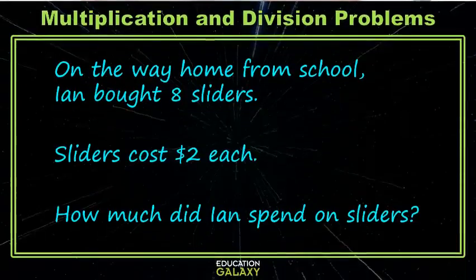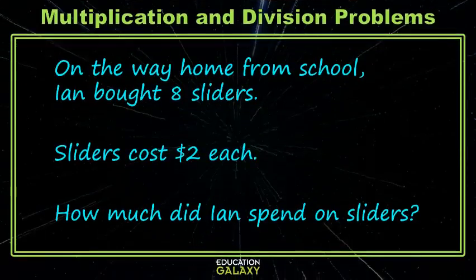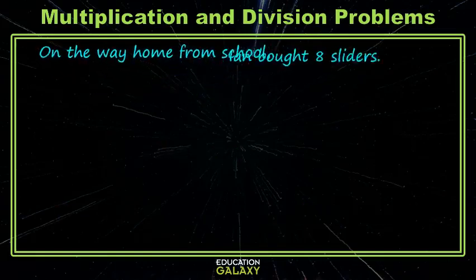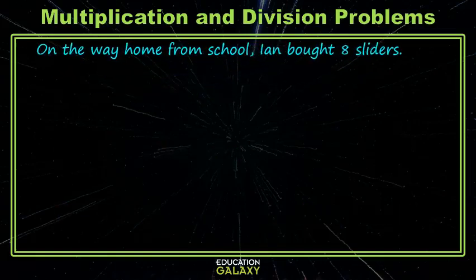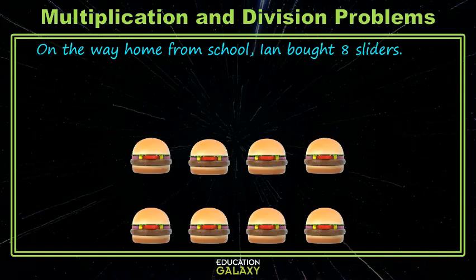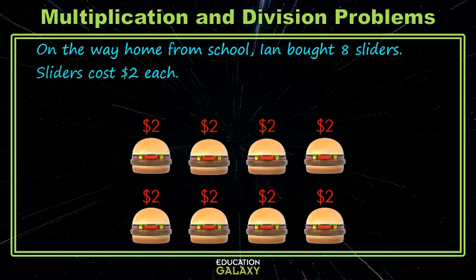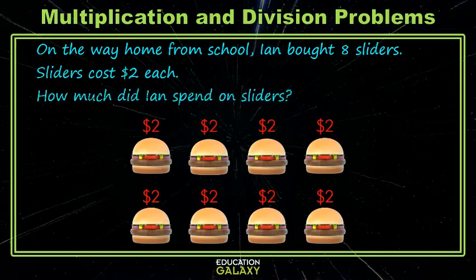So let's see what Ian did. On the way home from school, he bought eight sliders and they cost two dollars each, and we want to know how much he spent. So let's take this piece by piece. On the way home, Ian bought eight sliders. So let's give him eight sliders and they cost two dollars each. Let's make them each cost two dollars and we just want to know how much he spent.